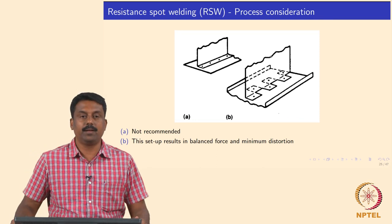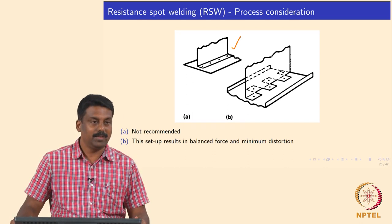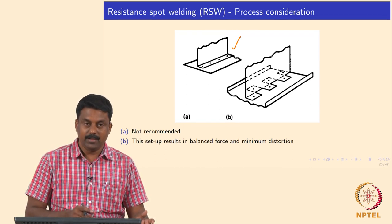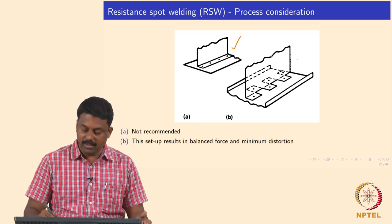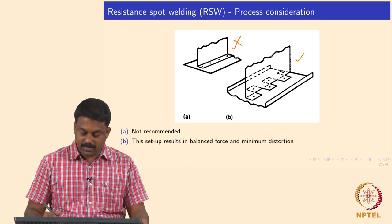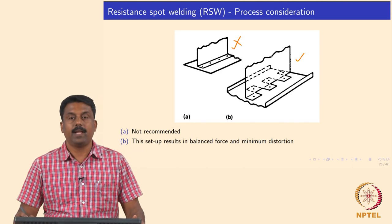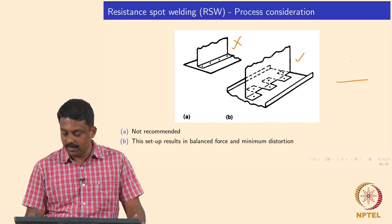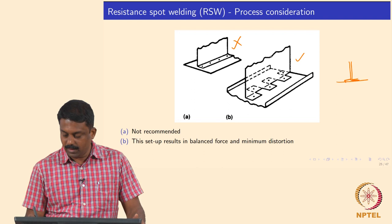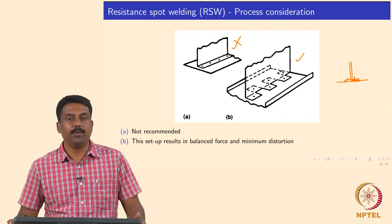Another geometrical consideration: it is never advisable to place spot welds in a straight line — the load distribution will be extremely poor. It is always advisable to use a zigzag weld pattern, which is much stronger geometrically and results in balanced force and minimal distortion.